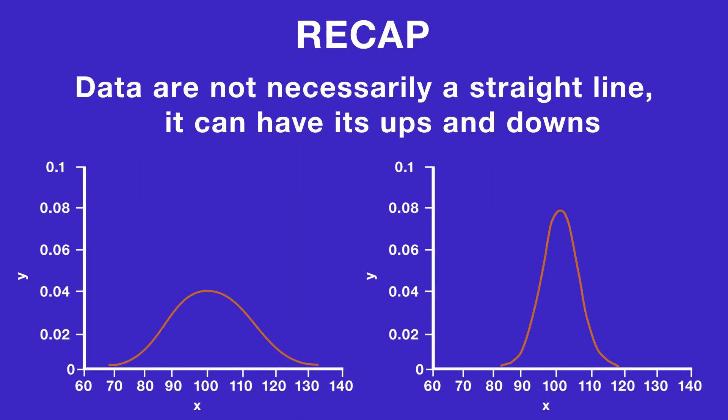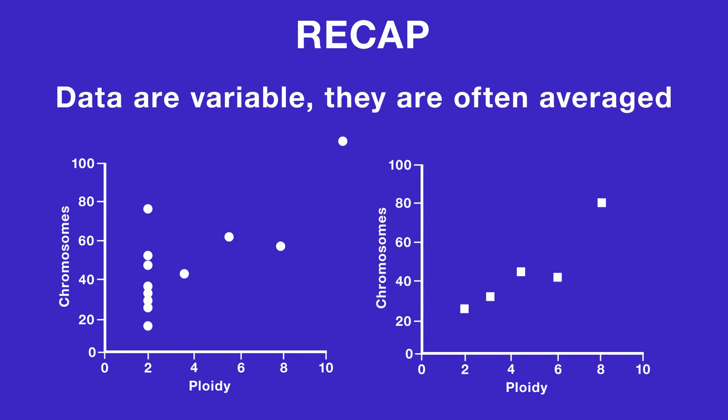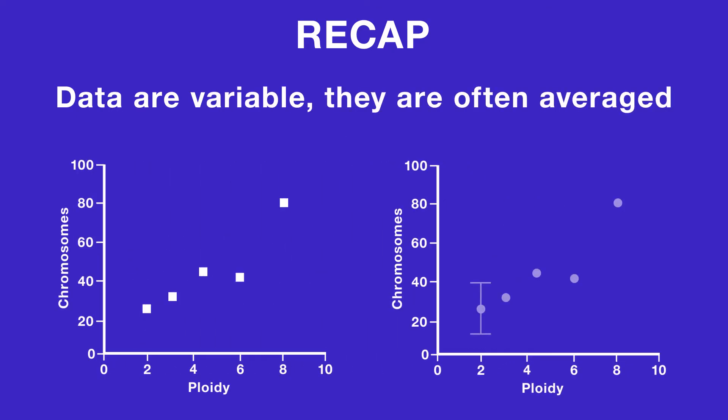Now let's wrap up with a summary of everything you've learned. Data are not necessarily a straight line — it can have its ups and downs, and that's okay. Trends like these can be captured on complex line shapes, like on a bell curve. Because data are variable, they're often averaged. The average is surrounded by error bars, which give you an idea of the variety of data points represented by that average. A picture is worth a thousand words, and graphs are the pictures that scientists use to describe their experiments. Whether you're using Visible Biology, your textbook, or looking at a news article, you're going to run into a graph. Hopefully now you feel a little more confident in your ability to interpret the data.